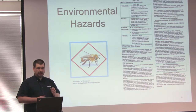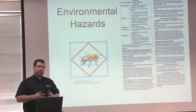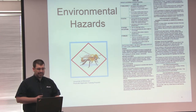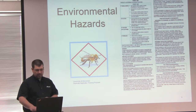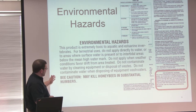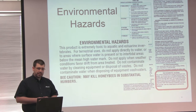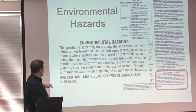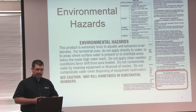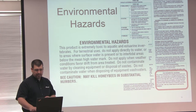Another part of the label lists all the environmental hazards of the pesticide. We use pesticides to help control unwanted pests, but sometimes the pesticide will have some negative effects on beneficial things that we want to keep in our field. For Sevin, we have to be very cautious when spraying it around honeybees. Also, there are some surface water issues and some other drift issues. So always look at the environmental hazard section before spraying your pesticide.